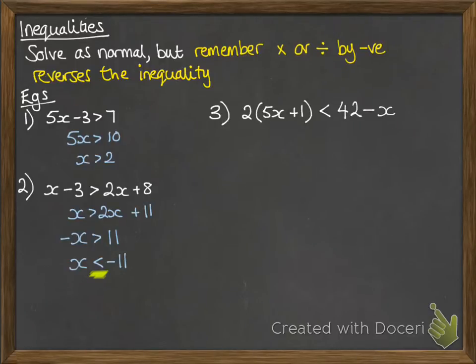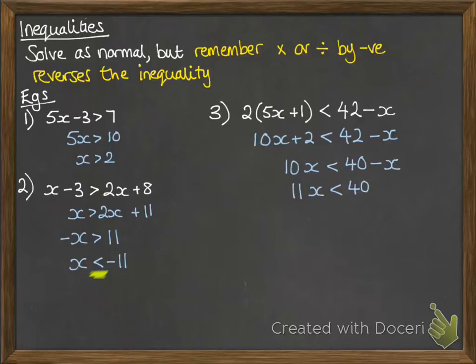Okay, and we can do it with more complex ones. So we multiply out the brackets and then do the same rearranging. So we end up with x less than 40 over 11.